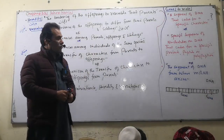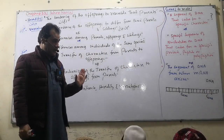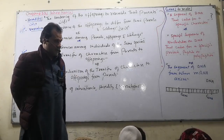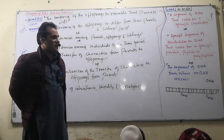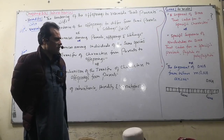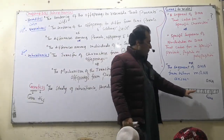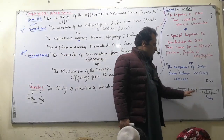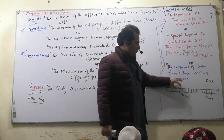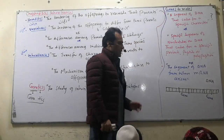Not all DNA in a cell is a gene — some DNA is known as junk DNA. If we go through the DNA molecule, not all of it codes for something. That portion which does not code is not a gene.